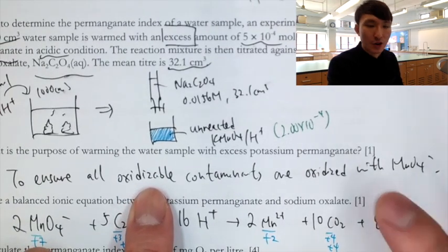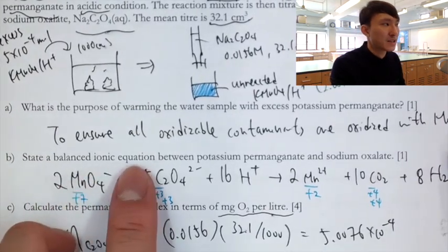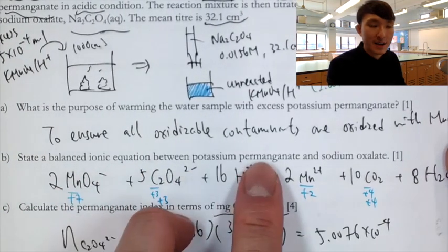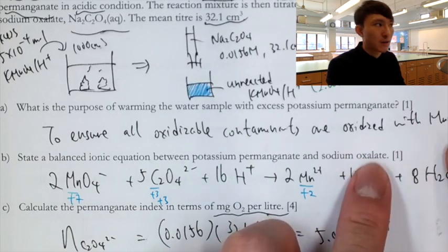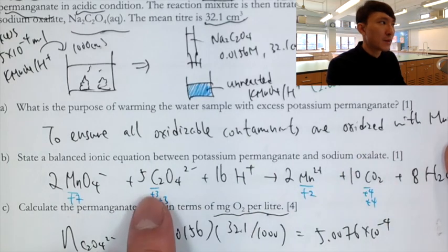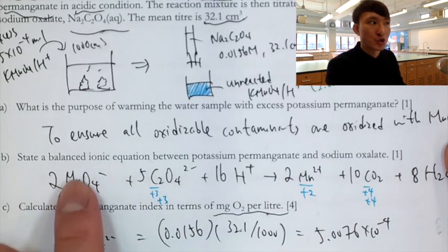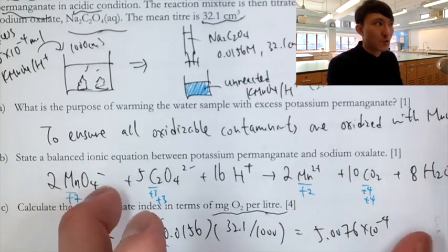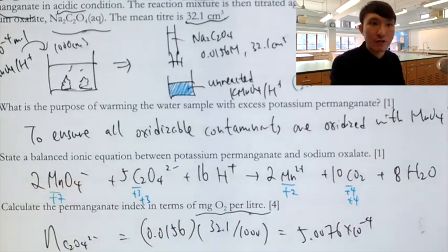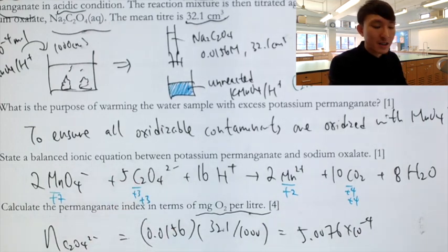For the calculation, we work backwards from the titration result. The number of moles of oxalate ion used = concentration × volume. Using the mole ratio of MnO4⁻ to oxalate of 2:5, the number of moles of permanganate unreacted = moles of oxalate × (2/5), giving us 2 × 10⁻⁴ moles unreacted.